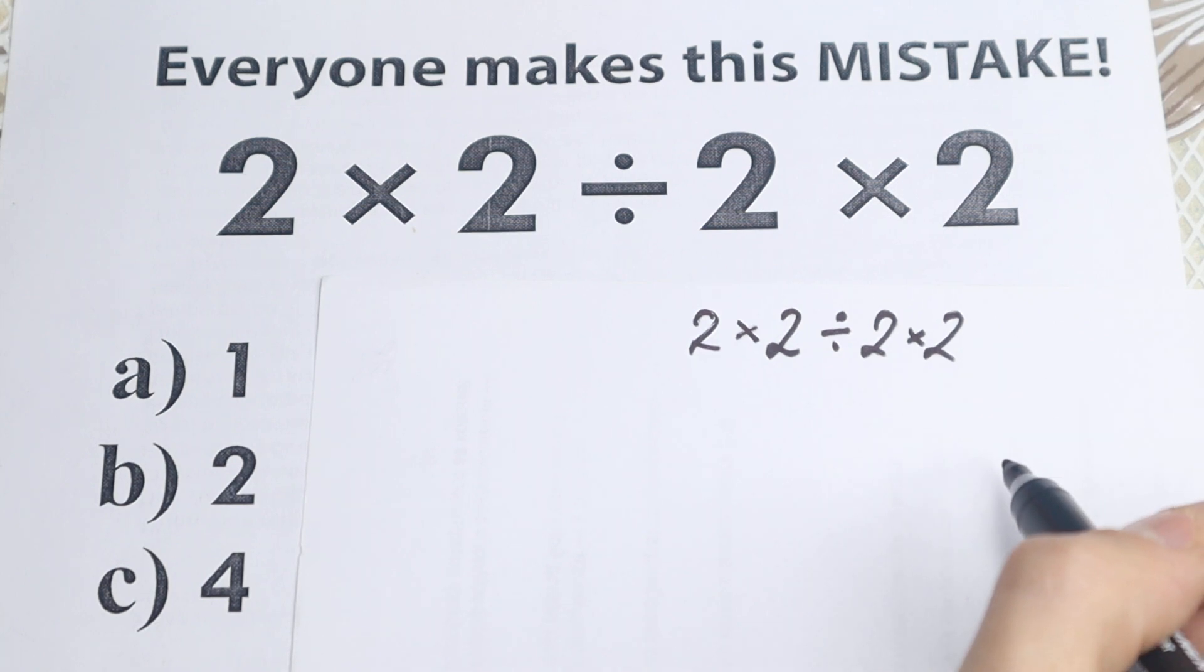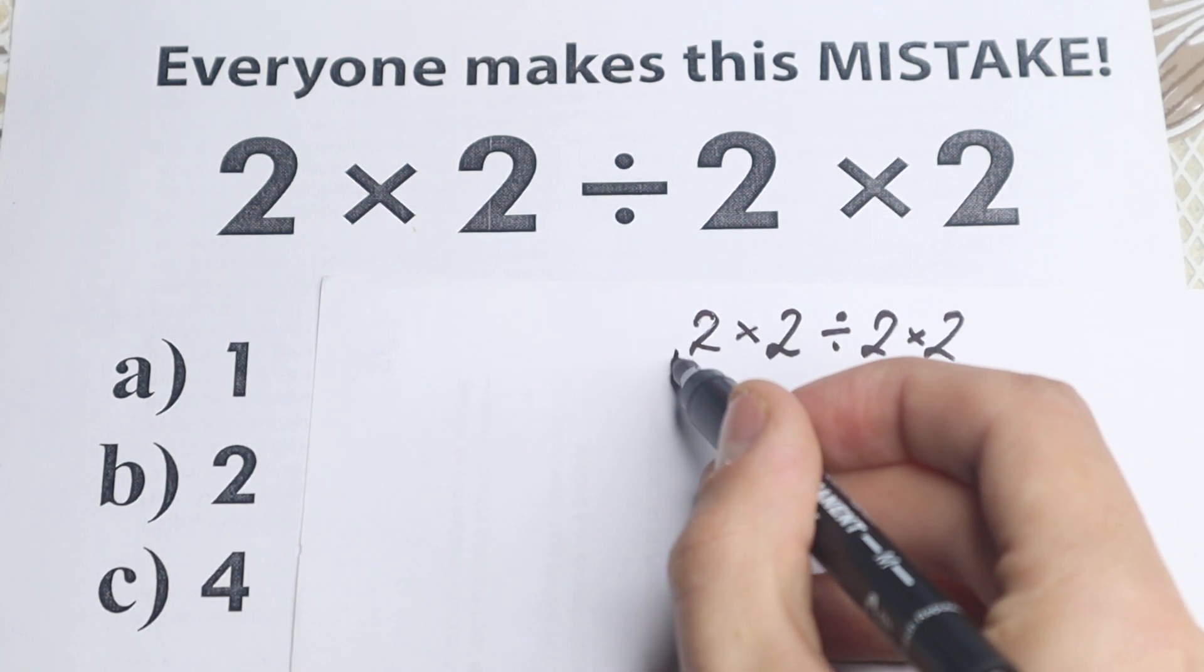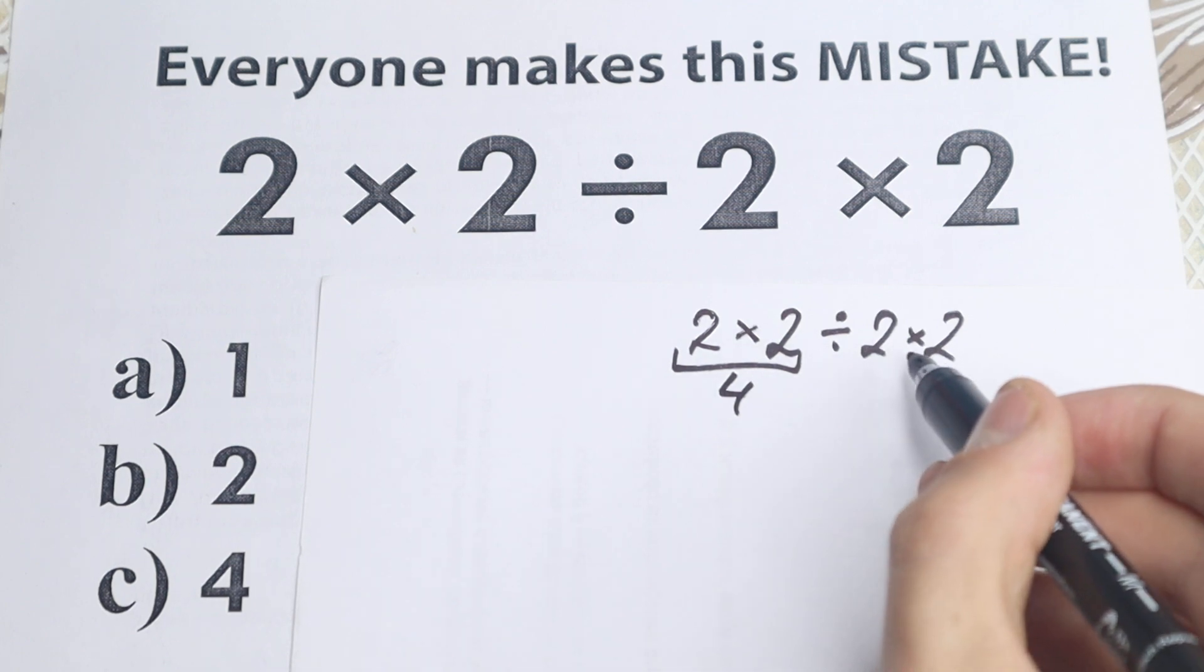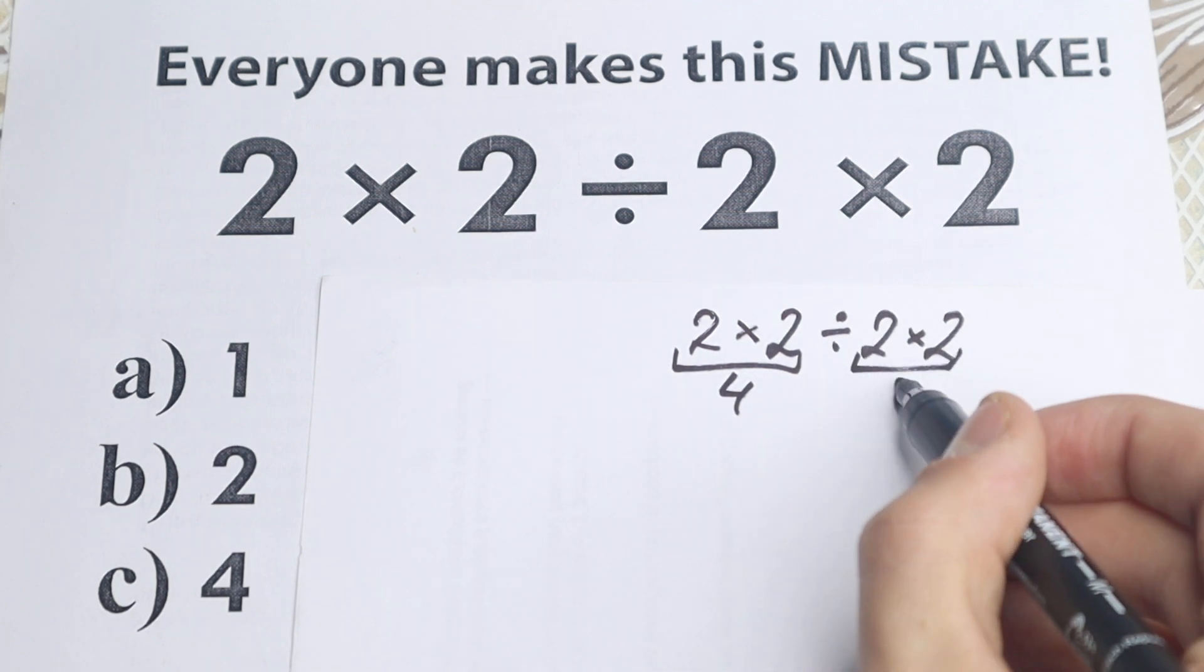They say okay right here we have 2 times 2, they know this is equal to 4. And right here 2 times 2, they say okay this is equal to 4 as well.